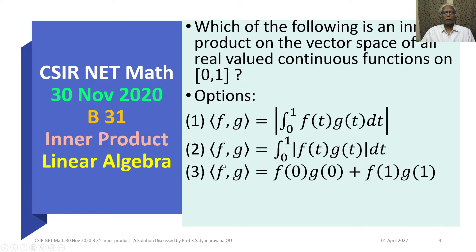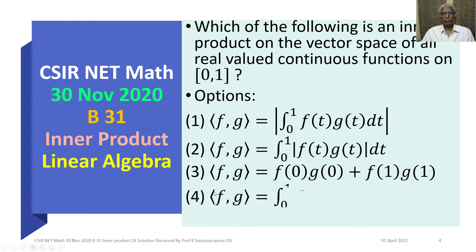Option 3: ⟨f, g⟩ is equal to f(0)·g(0) + f(1)·g(1). Option 4: ⟨f, g⟩ is equal to the integral from 0 to 1 of f(t)·g(t) dt.